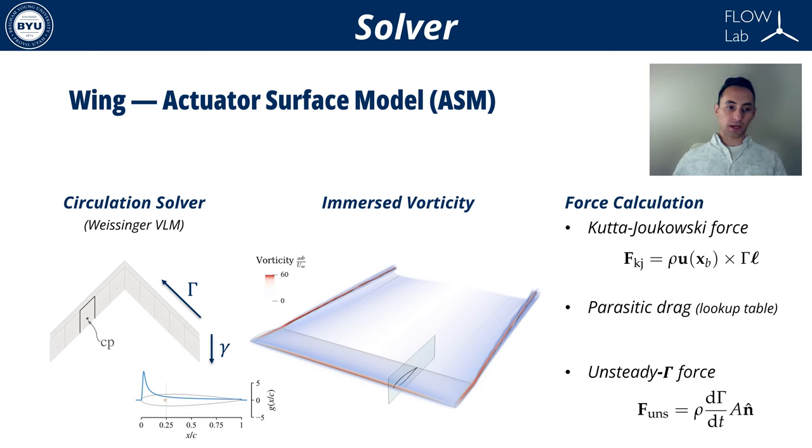The force along the wing is then calculated through the Kutta-Joukowski theorem, lookup tables, and an unsteady component.